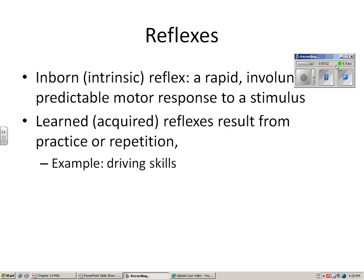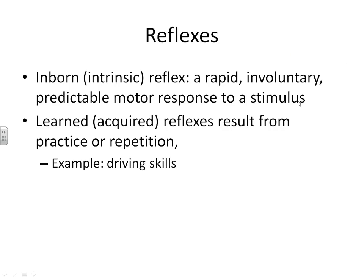Our last section in chapter 13 covers reflexes. You have two major categories of reflexes in your body. The first are your inborn or intrinsic reflexes — these are rapid, involuntary, predictable motor responses to a stimulus. Examples include opening your mouth to breathe when your nose is held, or withdrawing your hand from something hot. The other category is a learned or acquired reflex.